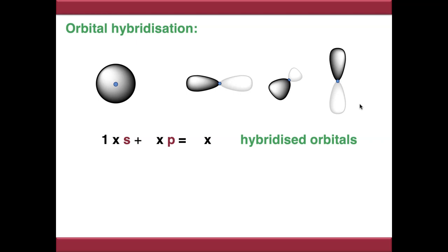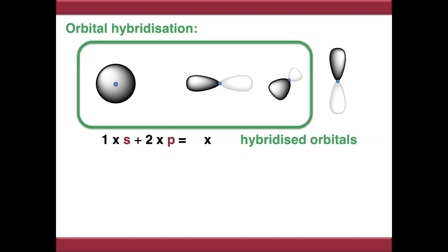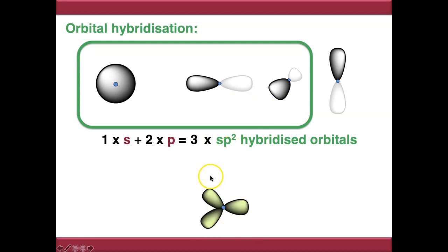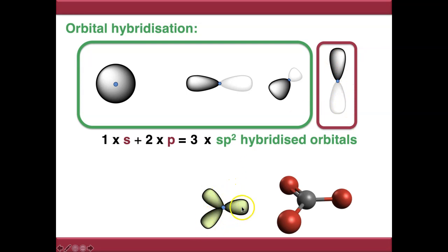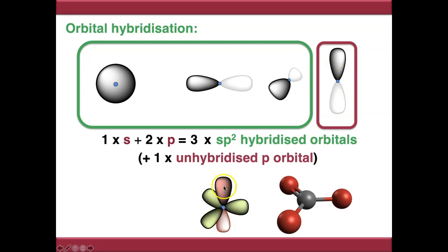In the second situation, mixing one s orbital with two p orbitals: we're putting three orbitals in, so we get three orbitals out. These are called sp2 hybridised orbitals because you've got one s and two p going in. sp2 hybridised orbitals look like this — again, an average of whatever you put in — and this looks familiar because this is the shape of trigonal planar. So this is sp2 hybridised carbon. We've still got an unhybridised p orbital left over, which is mutually orthogonal to the plane of these ones — sticking out of the plane.